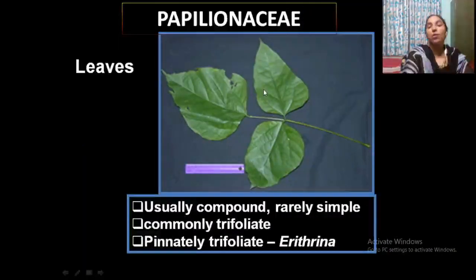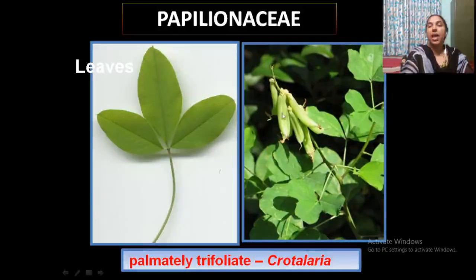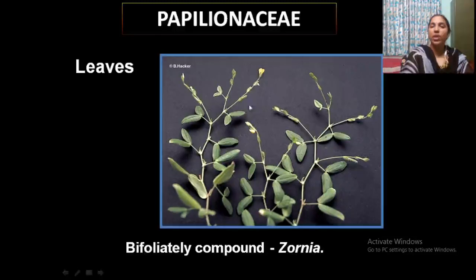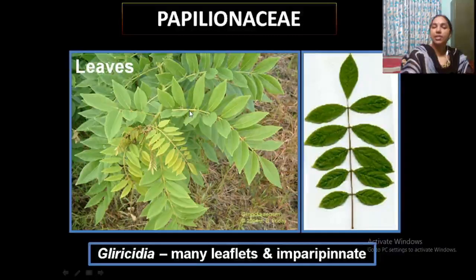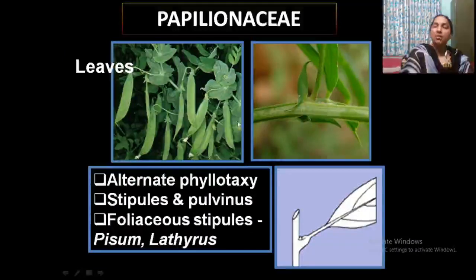Leaves are usually compound — simple leaves are very rare. Trifoliate leaves have three leaflets on a common rachis. Pinnately trifoliate and palmately trifoliate conditions are also observed, as in Crotalaria. Another type is bifoliate compound, example Zornia. Usually pinnately or palmately compound of different types. A very common field plant is Glyricidia (Shemakonna), having many leaflets that are imparipinnate — meaning the leaf ends in an odd leaflet. In terms of phyllotaxy, arrangement is usually alternate.